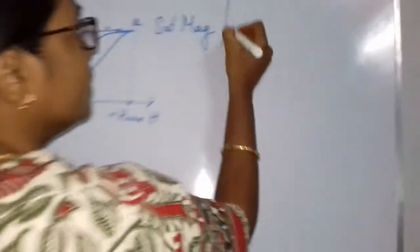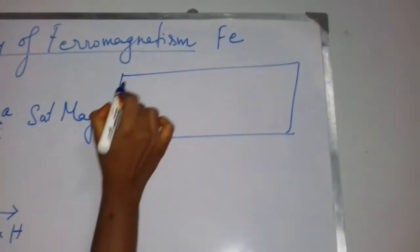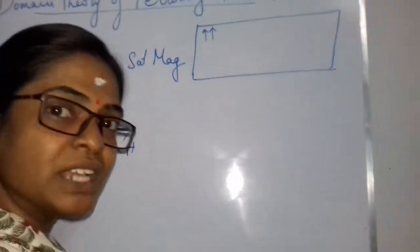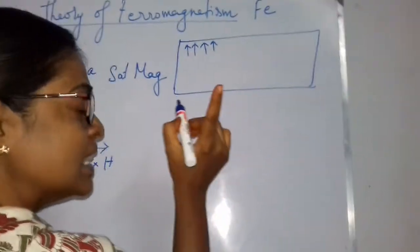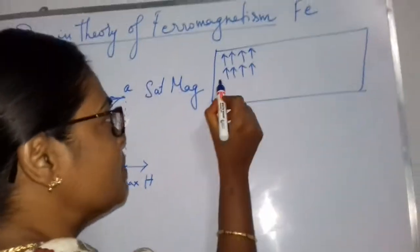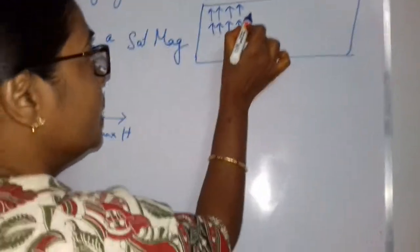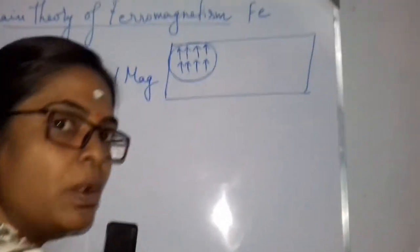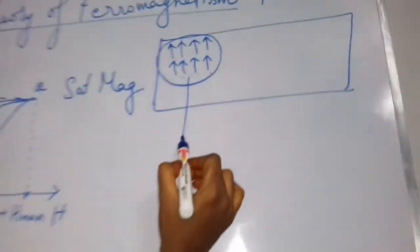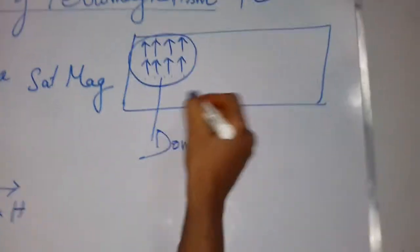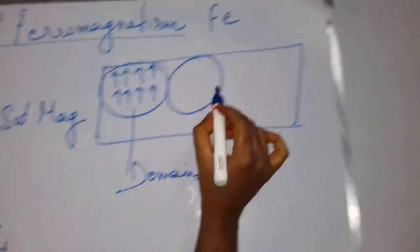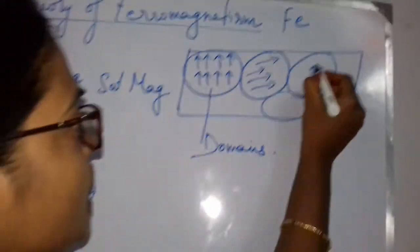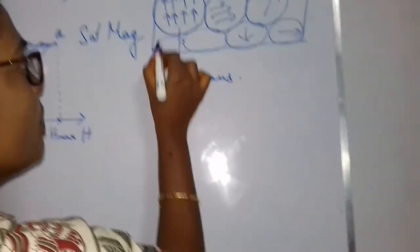Now we will see the reason for this particular curve. Initially, a ferromagnetic material — take iron — the atoms have a magnetic moment even before any external magnetic field is applied. Due to Heisenberg's exchange interaction between the spin magnetic moments of neighboring lattice atoms, there is local alignment. However, this interaction is a very short-range interaction and cannot extend to the whole material. Therefore, small regions called domains form, with many domains aligned in different directions inside the ferromagnetic material.